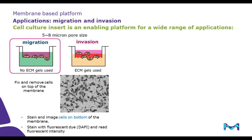In both cases, directional movement of cells towards the chemoattractant can be measured simply by removing cells — or cells and ECM gels in the case of the invasion assay — from the top side of the membrane, and imaging cells on the bottom side of the membrane.